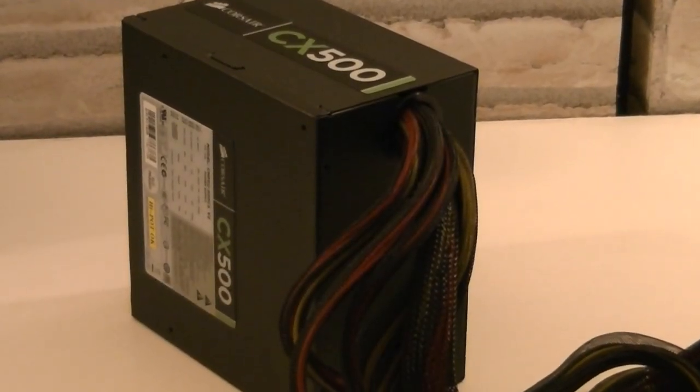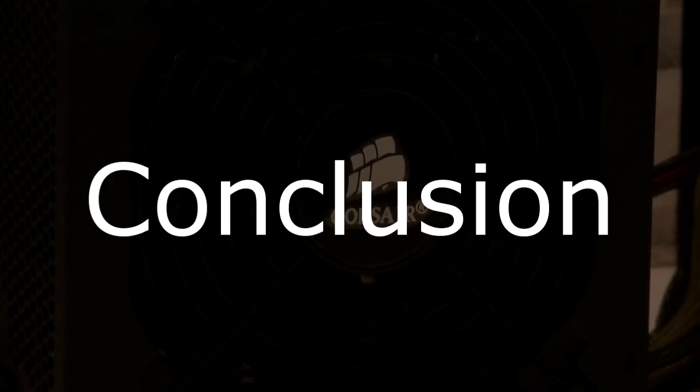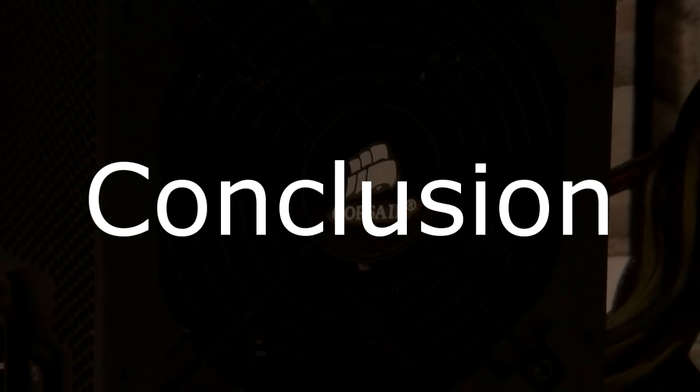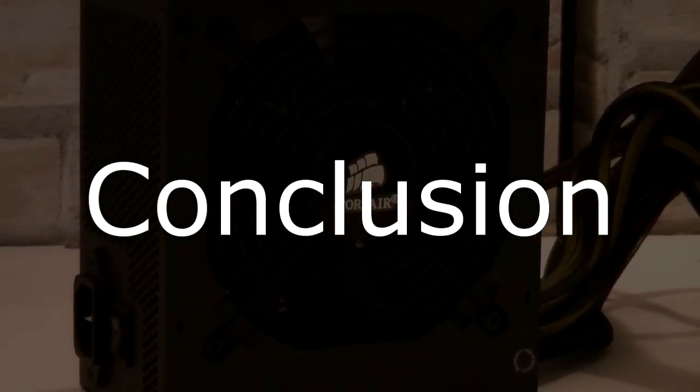Each side of the unit looks very tidy. The Corsair Builder Series CX 500 version 2 power supply is a great choice if you're planning on building a budget build. This isn't meant for a hardcore enthusiast machine. For the price it's definitely a great choice.